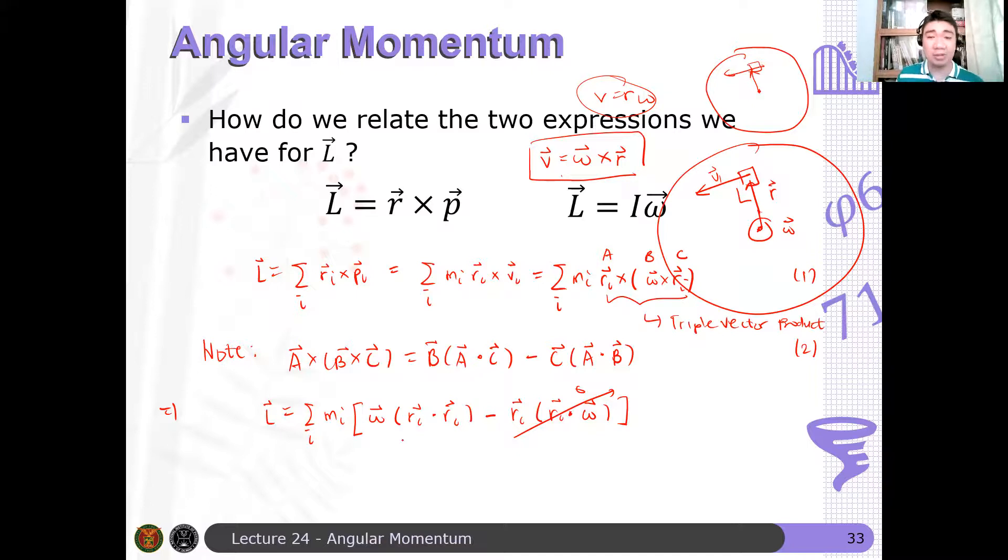Now what is r dot omega? Remember, omega is out of the paper or into the paper in our sense. And r is always in the plane of the rotation. Therefore, by definition, they should be perpendicular to each other. And therefore, their dot product should vanish. And hence, the second term here should vanish. But what's r_i dot r_i? This is just r_i squared. So I have summation over i, m_i, r_i squared, omega vector. And since omega now is independent of the particle, and it's only dependent on the rigid body, we have shown here that this summation can be written as summation over i, m_i, r_i squared times omega vector. And this is just equal to I omega vector. Hence, we have shown that this definition here is equal to this definition here.